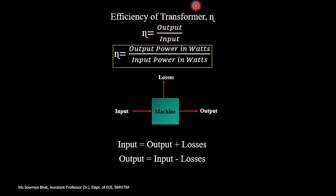One is called the output parameter and another one is called the input parameter. Transformer efficiency, which is represented in terms of eta, is given as output power in watts divided by input power in watts — that is, it is the ratio of output power to input power, expressed in watts.